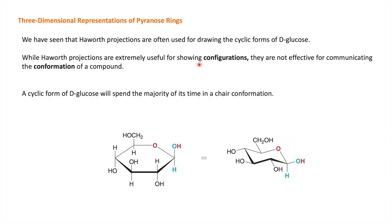Up to now we have studied pyranose rings and Haworth projections. Haworth projections are good for showing configuration, but they are not effective for showing the conformation of a compound. In a Haworth projection, we simply represent hydroxyl groups as present upward or downward. But actually D-glucose exists in a chair form in space. In the chair form, you can see that hydroxyl groups occupy equatorial or axial positions, and this is the correct way to represent D-glucose.